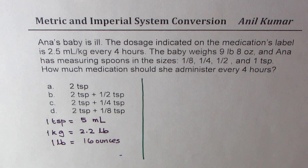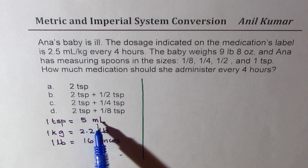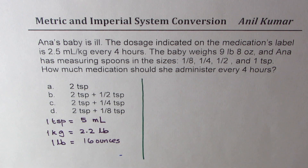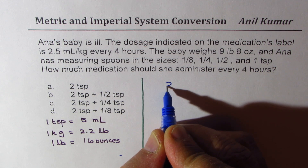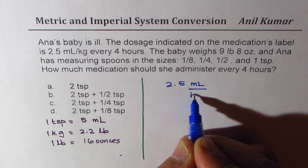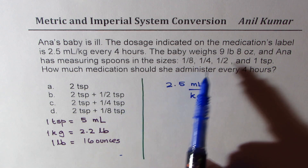Let me share a very methodical way of doing such questions in a straightforward manner. What we really want here is to find how many teaspoons to give to the child, which is based on the weight. We are given 2.5 milliliters for each kg — that is the unit to begin with. We need to convert this to teaspoons and pounds.